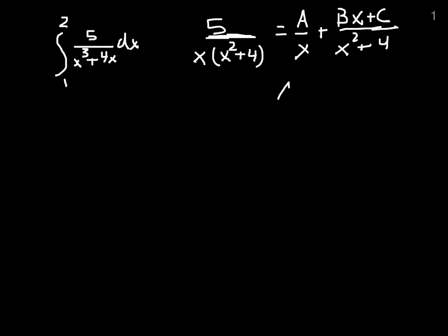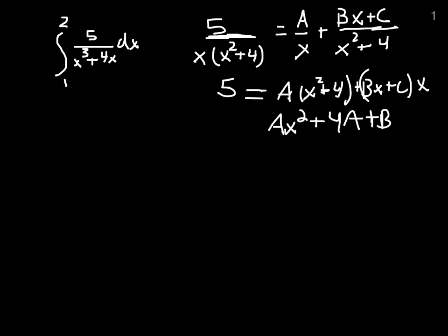I'm going to cross multiply to find that a needs to be multiplied by x squared plus 4, and bx plus c needs to be multiplied by x. And when it's all said and done, it should be equal to 5. Let's expand out. We have ax squared plus 4a plus bx squared plus cx, and it's equal to 5. But we think about the 5 as 0x squared and 0x plus the 5.